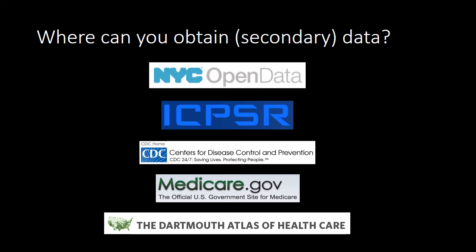Some places where you can find secondary data include New York City Open Data, which makes available many data sets compiled by the city. ICPSR — the Inter-university Consortium for Political and Social Research — maintains a data bank of data collected by social science researchers, available to students at member universities. CUNY is a member, so you can download data sets collected by other researchers for your own projects.